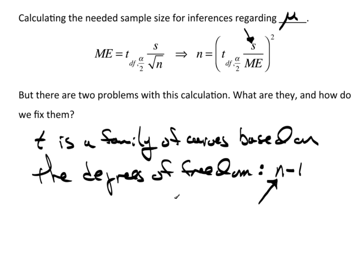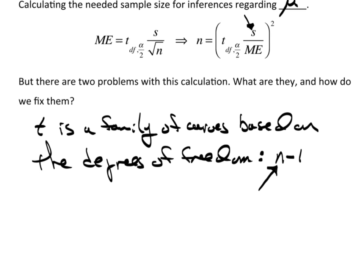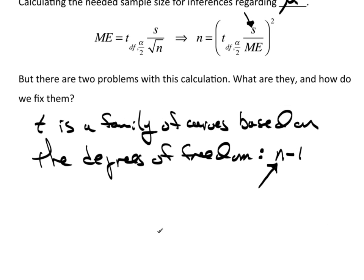So this is what we do. This is where we salvage this situation. Knowing that the Z and T are very close to each other, we change this to N equals Z of alpha over 2. And then we have S over the margin of error squared. Well S is still a problem. We still need to come up with a way to estimate S. And that's exactly what we're going to do.